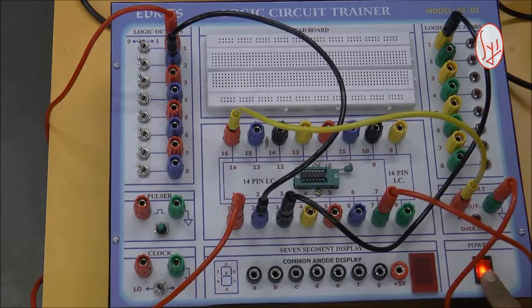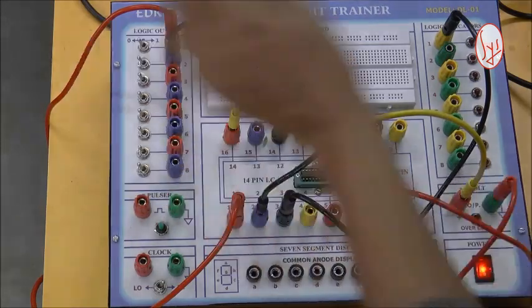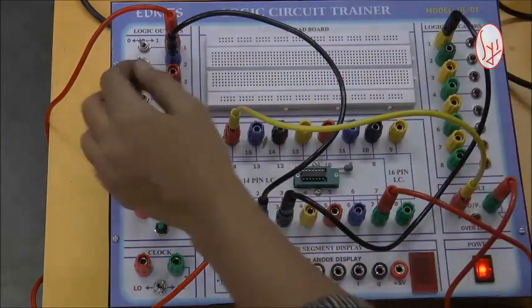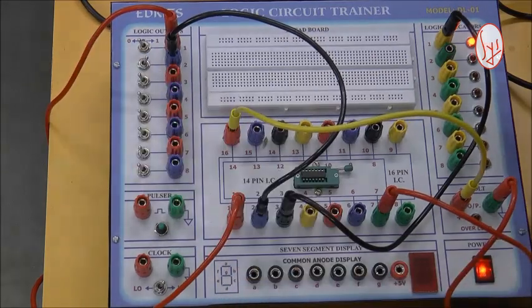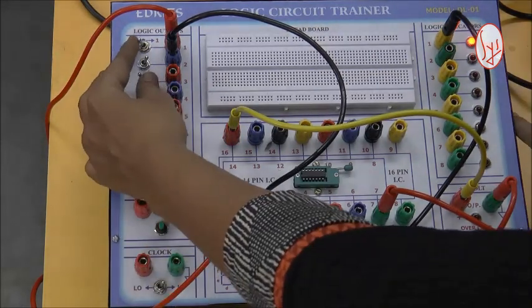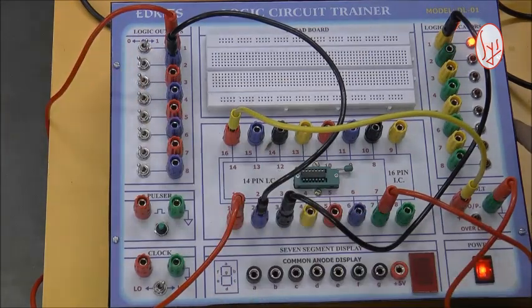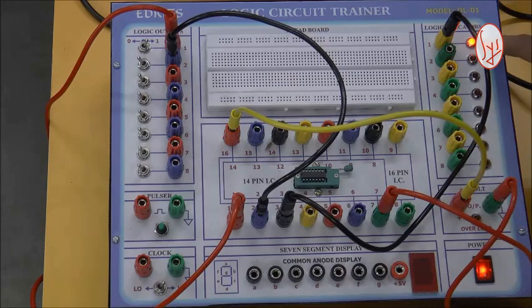Let's verify the truth table. If both inputs are 00, your output is 0. If first input 0 and second input 1, your output is 1. First input 1 and second input 0, your output is 1. Your LED glows, meaning your output is high.